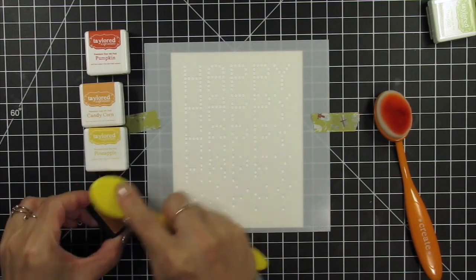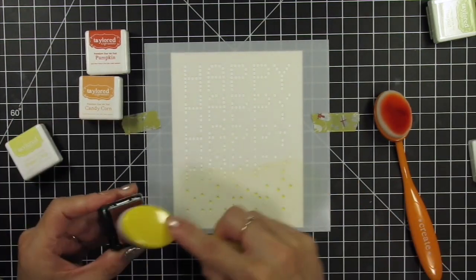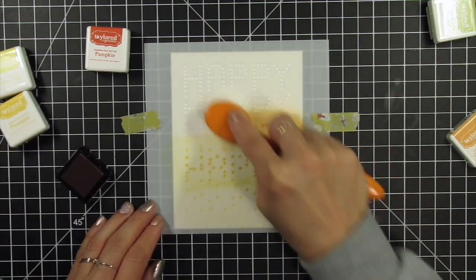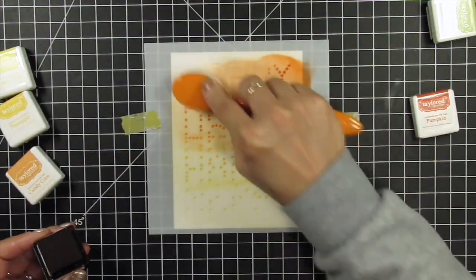After securing my sugar cube panel on my cutting mat and centering the stencil on top, I select my inks to represent fall leaf colors. I'll start with Potato Chip, the lightest color at the bottom, then move to Pineapple, which is a richer yellow, then I switch to Candy Corn and finish with Pumpkin.